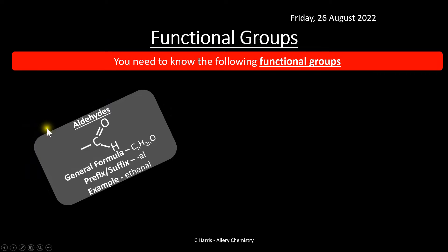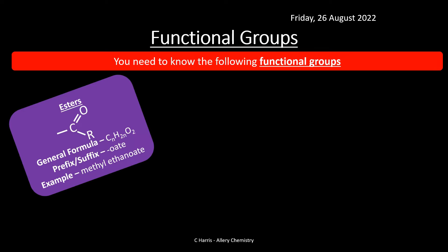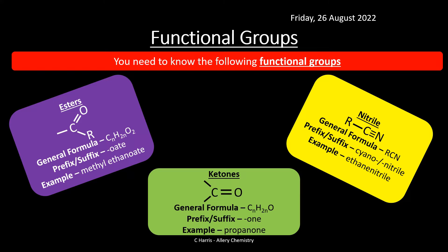Aldehydes have the C=O group at the end of a carbon chain and end in -al, like ethanal. Carboxylic acids and dicarboxylic acids have formula CₙH₂ₙO₂ with a C=O and OH group, ending in -oic acid. Esters are derivatives of carboxylic acids with a C=O–O group, ending in -oate, for example methyl ethanoate. Ketones have the carbonyl C=O between two carbons and end in -one, for example propanone. Nitriles have a CN group and end in -nitrile, for example ethanenitrile.